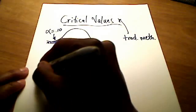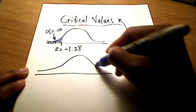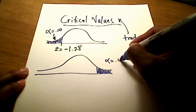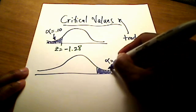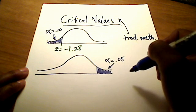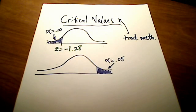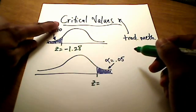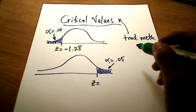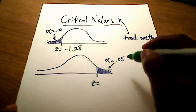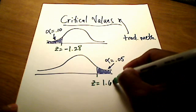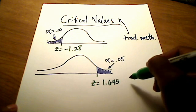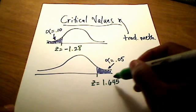Similarly, if we're using a right tail test and we're given an alpha of 0.05, all of our level of significance is sitting in the right tail, and you'd be required to find the z number that corresponds to that. That critical value z number in this case is 1.645 — I'm taking it to three decimal places because it sits between 1.64 and 1.65, so I cut it right in half.